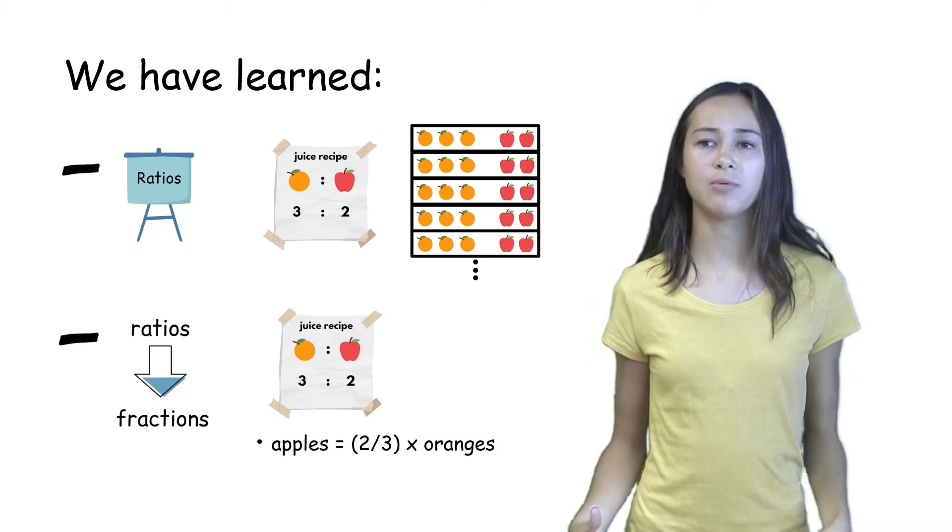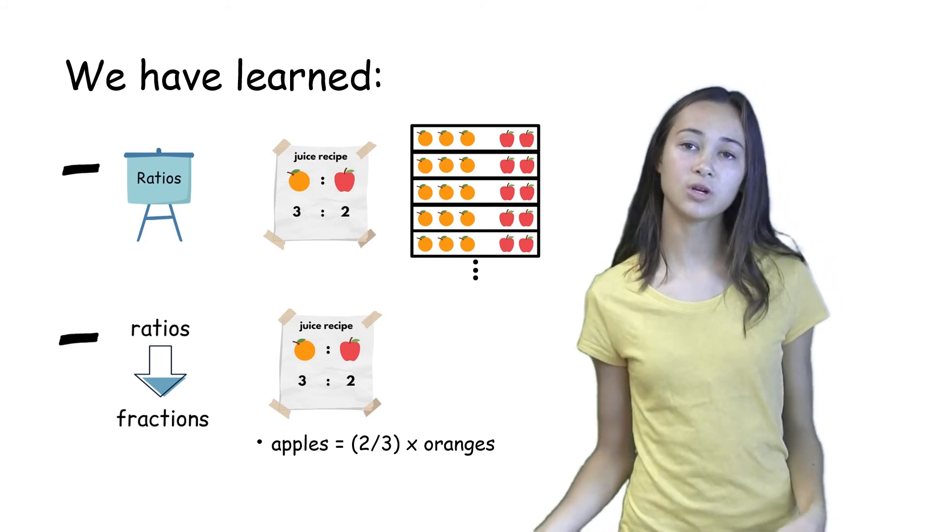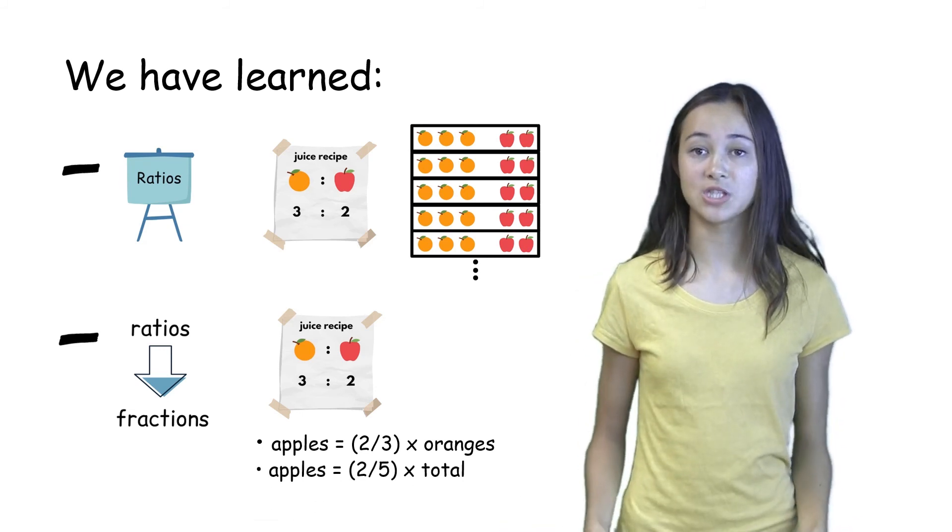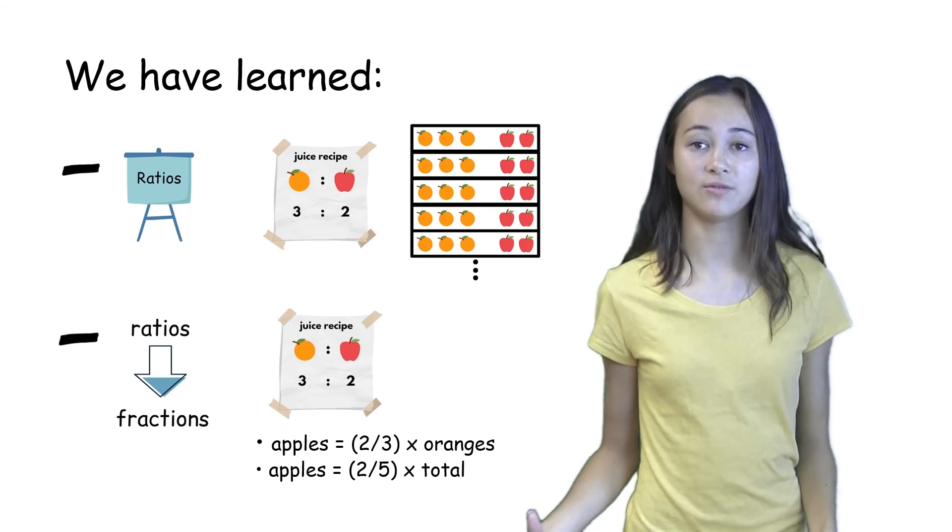And we found that the number of apples was two-thirds the number of oranges. And we found the number of apples was two-fifths the number of total fruit.